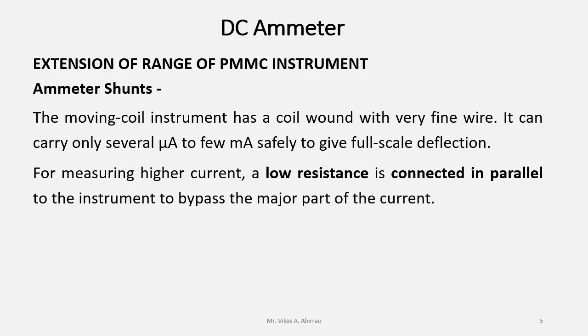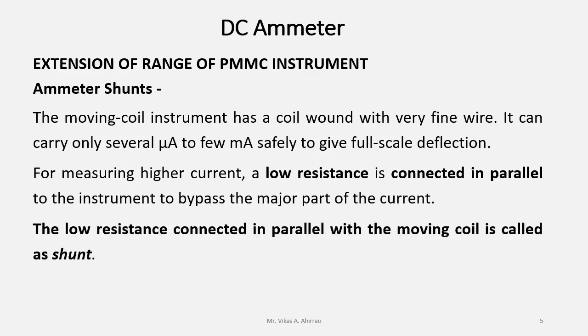For measuring higher current, a low resistance is connected in parallel to the instrument to bypass the major part of the current. The low resistance connected in parallel with the moving coil is called the shunt.